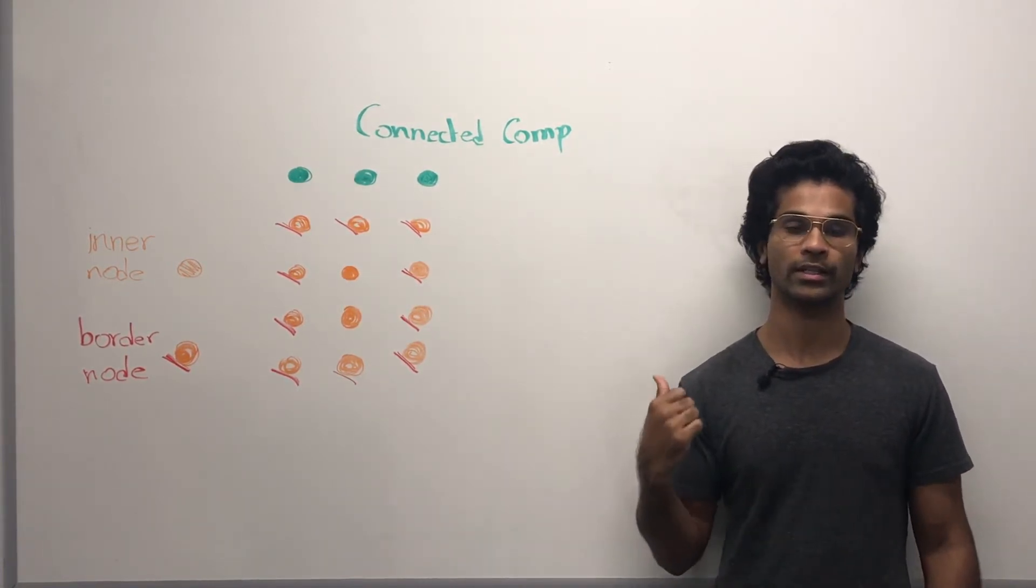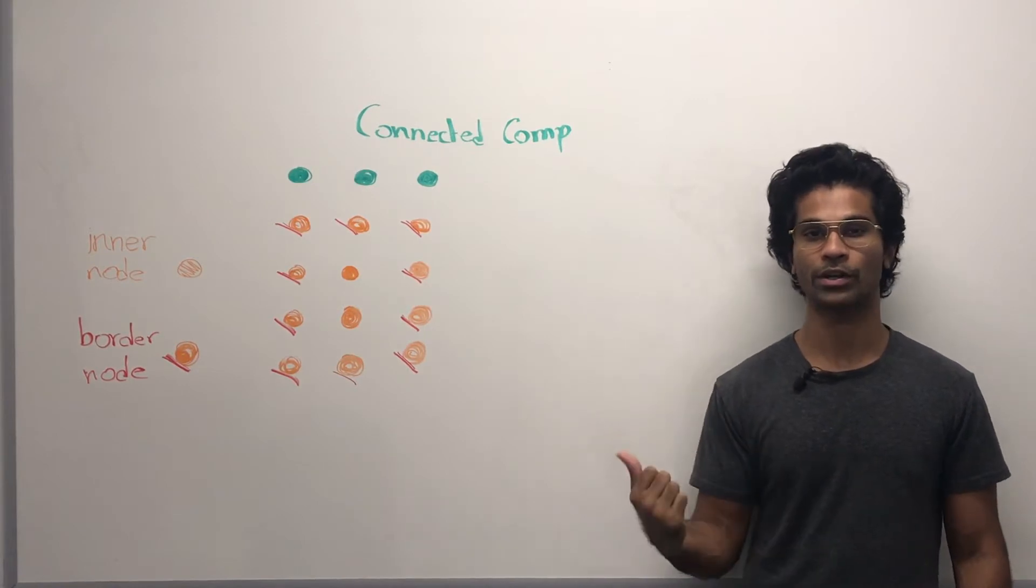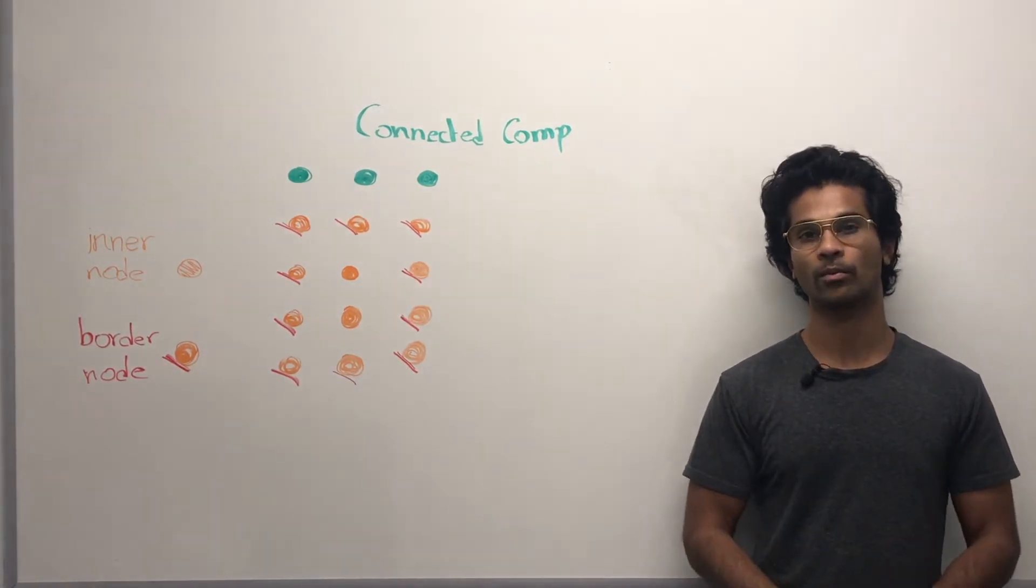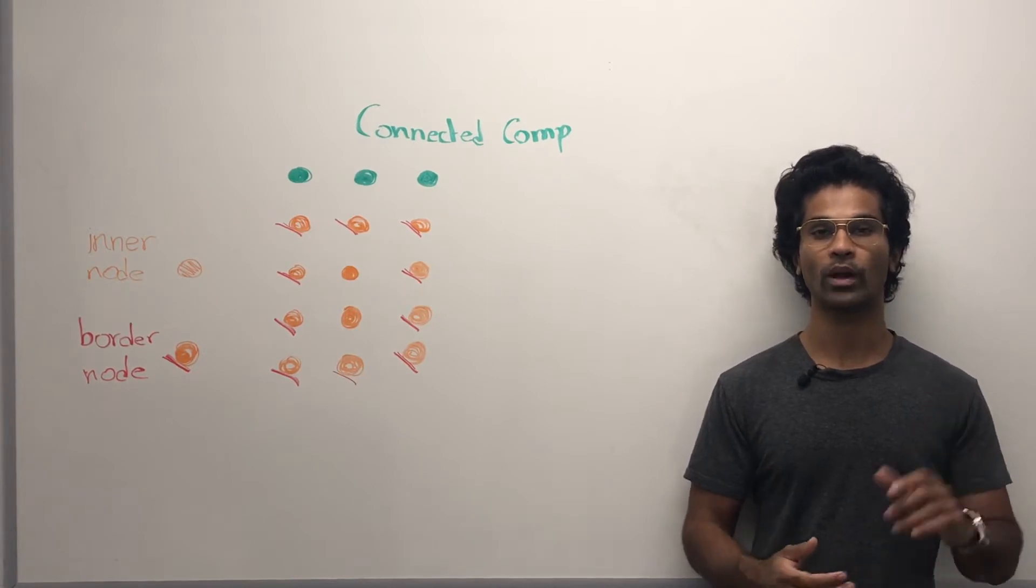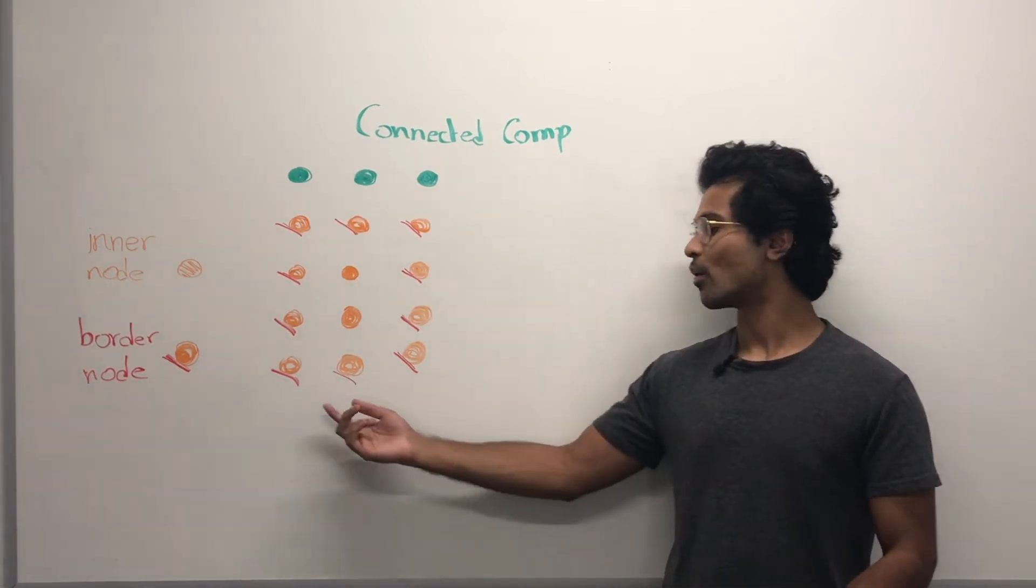Here we have two connected components. One is green, one is orange. For the purpose of this problem, we're going to make a distinction between the nodes in one connected component. In the orange connected component, everything that I've put a red dash next to is going to be called a border node,